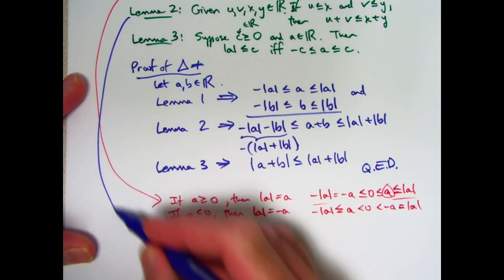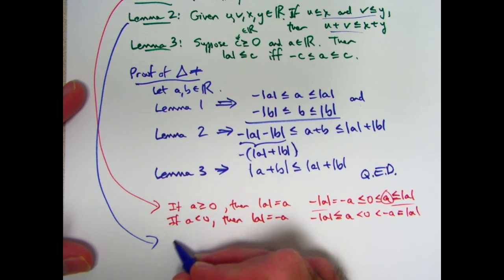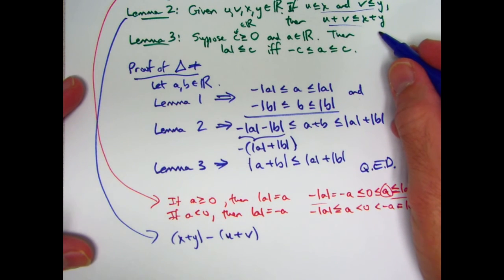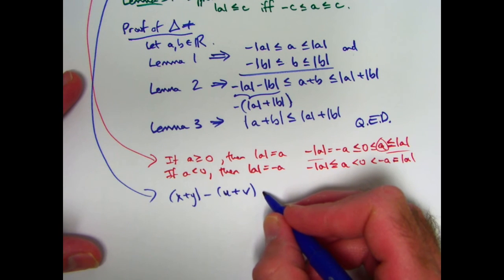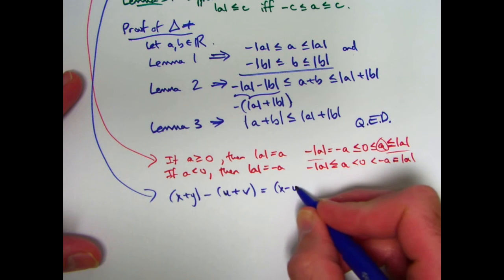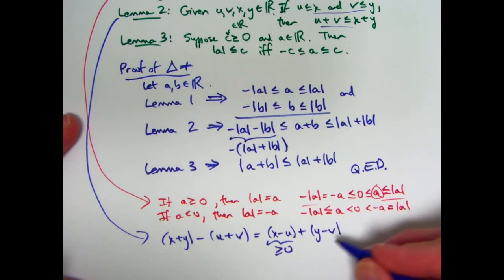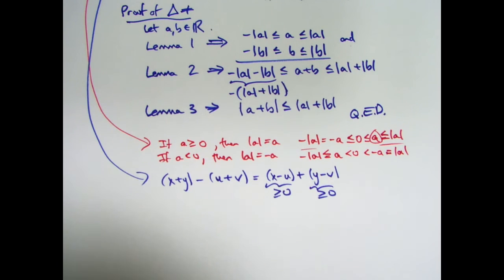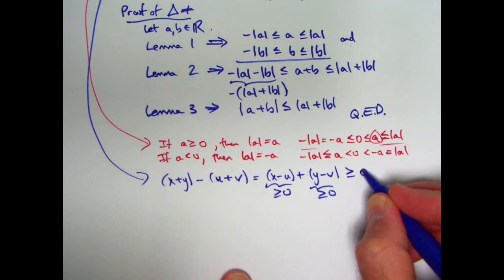Lemma two: given four numbers satisfying the two assumed inequalities, I want to show u + v ≤ x + y. The key is to consider the difference (x + y) minus (u + v). If I can show that's greater than or equal to zero, I'm done. Using the distributive and commutative properties, rewrite this as (x minus u) plus (y minus v). By assumption, x minus u ≥ 0 and y minus v ≥ 0. Since the real numbers are an ordered field, the sum of two non-negative numbers is non-negative.